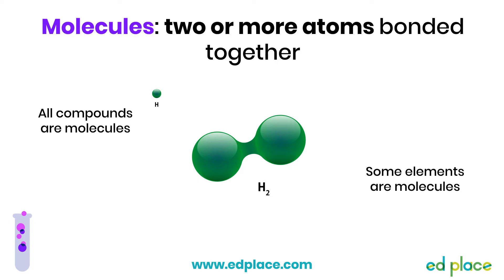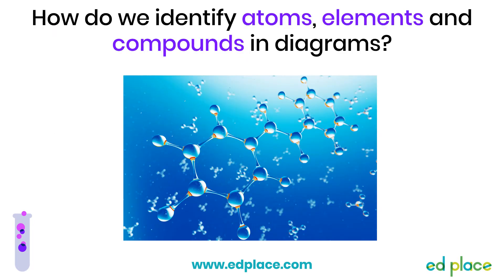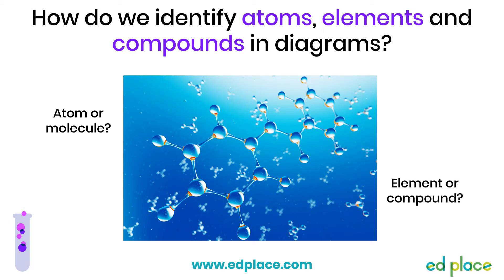The atoms of other elements, however, like hydrogen, join together as pairs, making a molecule. When presented with diagrams of different substances, it's easy to become bogged down with the key words, but only two key words will need to be applied to each diagram. A good rule is to decide first whether a substance is an atom or a molecule, then decide whether the substance is an element or a compound.